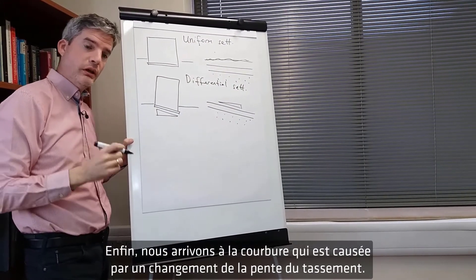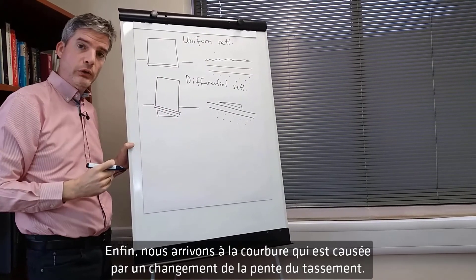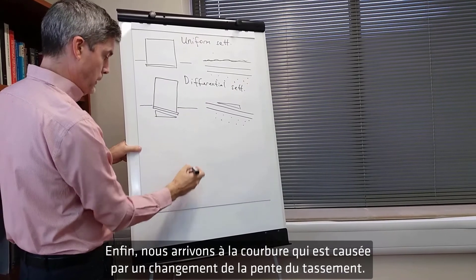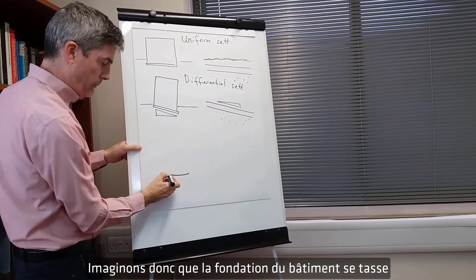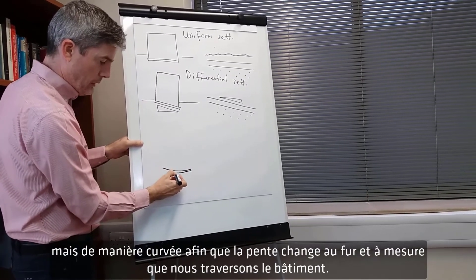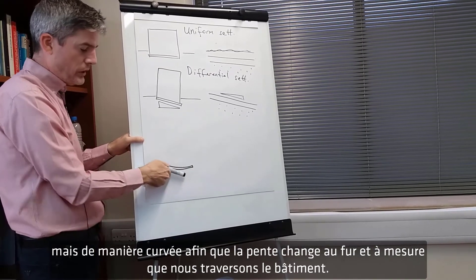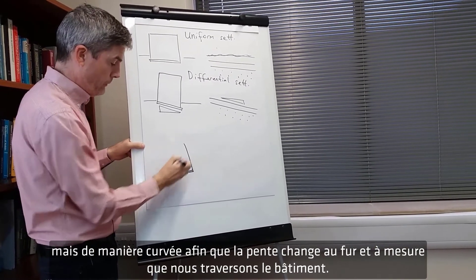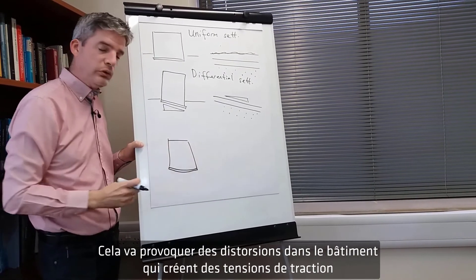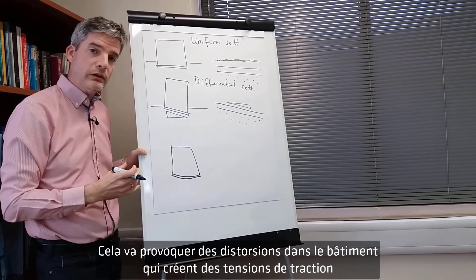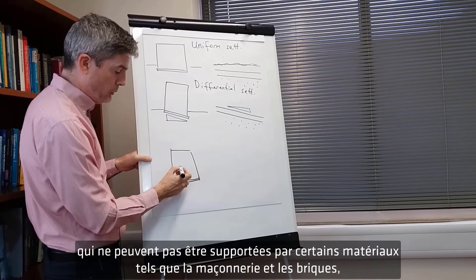Finally we come to curvature, which is caused by a change in the slope of settlement. If the building foundation settles in a curved way so that the slope is changing as we go across the building, that's going to cause distortions in the building that create tensile strains that cannot be sustained by certain materials such as masonry and brickwork.